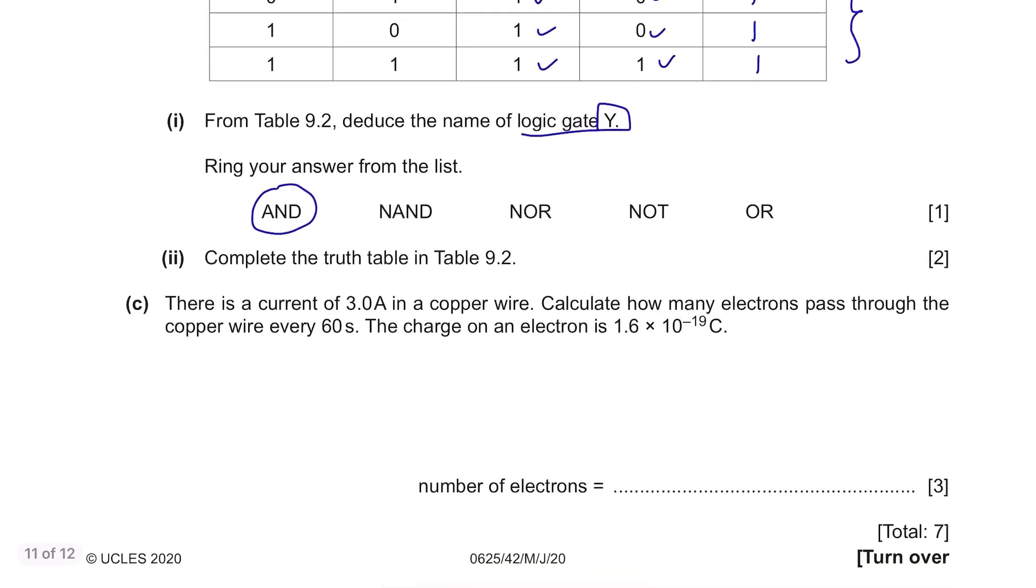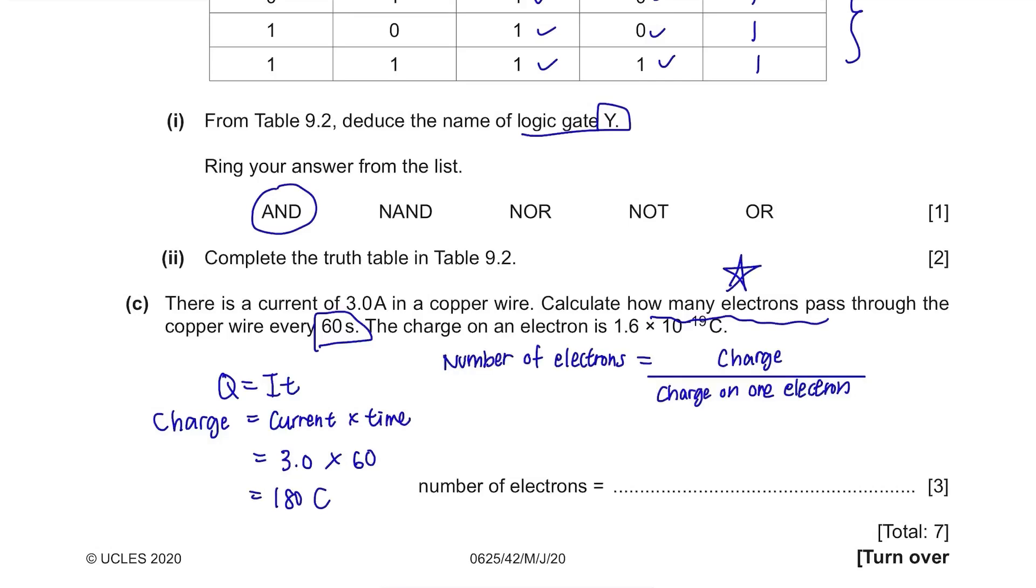Part C. There is a current of 3.0 Amperes in a copper wire. Calculate how many electrons pass through the copper wire every 60 seconds. The charge on an electron is 1.6 times 10 to the power of negative 19 Coulombs. A formula that connects current, time and charge is Q equals I times T. Charge equals current times time. Just substitute the values: 3 times 60, 180 Coulombs. To find the number of electrons in the charge, we need to divide the charge by the charge on one electron. So 180 divided by 1.6 times 10 to the power of negative 19, 1.1 times 10 to the power of 21.